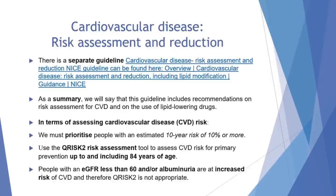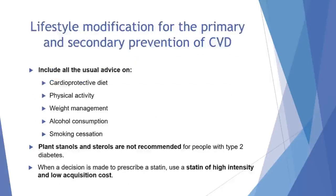For guidance on the primary and secondary prevention of cardiovascular disease in diabetes, there is a separate NICE guideline on cardiovascular disease, primarily aimed at lipid management. This guideline includes recommendations on risk assessment for cardiovascular disease and on the use of lipid-lowering drugs. In terms of assessing cardiovascular disease risk, we must prioritize people with an estimated 10-year risk of 10% or more. We will normally use the Q-risk assessment tool to assess cardiovascular risk for primary prevention up to and including 84 years of age.